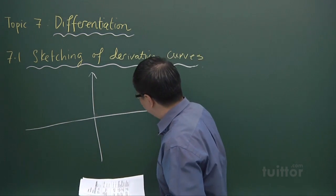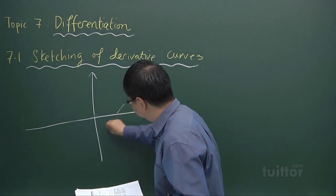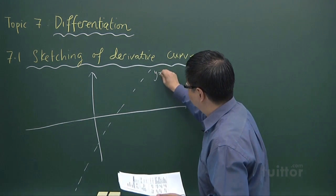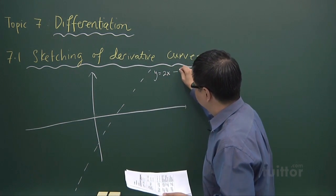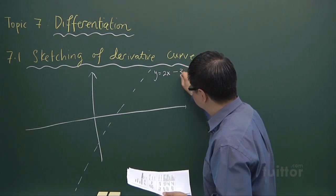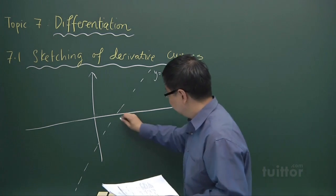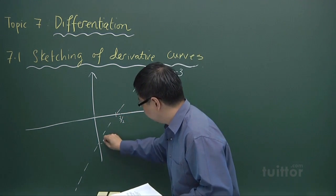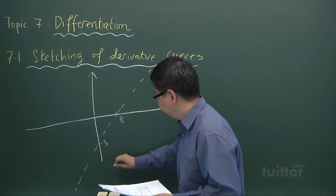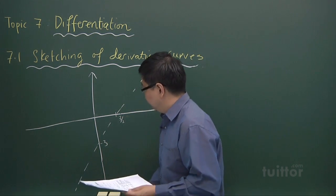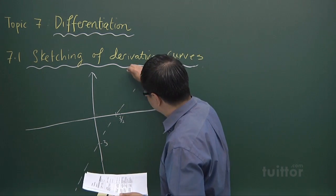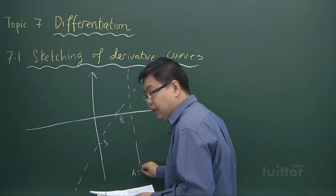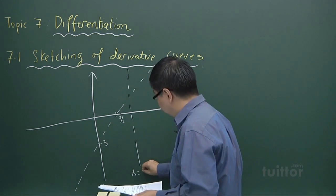Suppose we have this oblique asymptote, that is y equals 2x minus 3. This will be, of course, 3 over 2, and of course minus 3. Suppose there is also a vertical asymptote here, x equals 2.